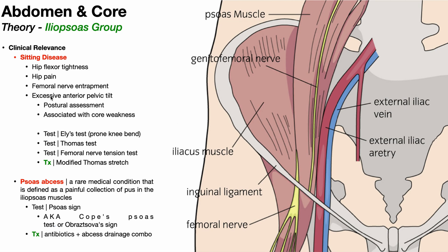Another consideration is excessive anterior pelvic tilt. The hip flexors tend to anteriorly tilt the pelvis, so if they're tight, you'll have someone who postures with too much anterior pelvic tilt, which can be identified in a postural assessment. Excessive anterior tilt is often associated with weakness of the core — specifically the rectus abdominis muscle, because that's the one that counteracts the downward pull of the psoas by posteriorly tilting the pelvis.